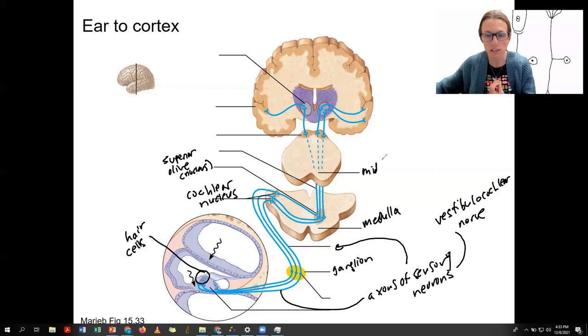That's what this structure is here towards the cerebrum. There's going to be a synapse in the inferior colliculus.